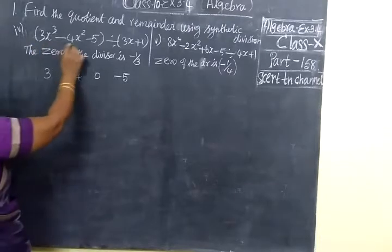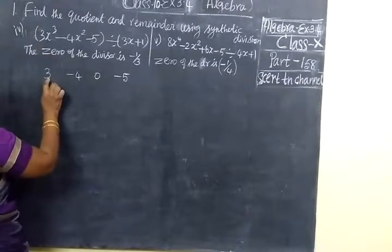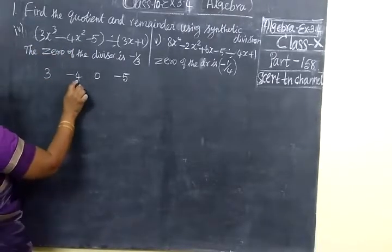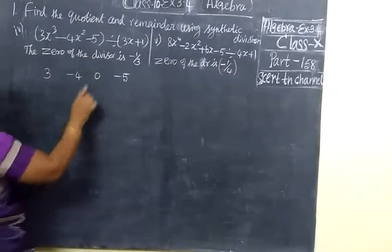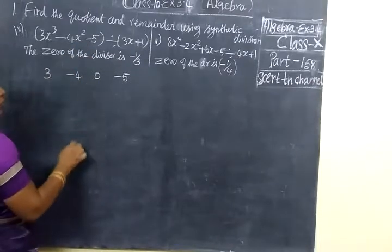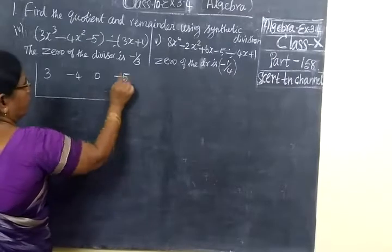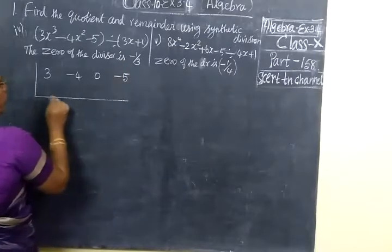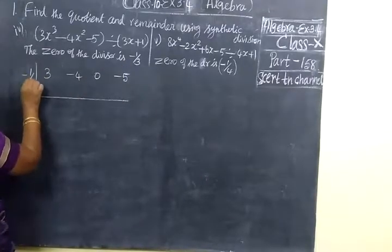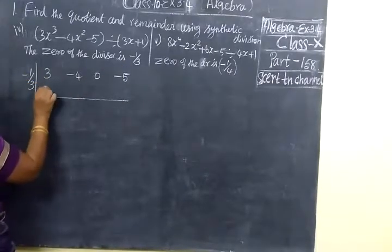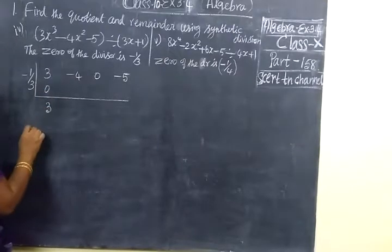This is not in standard form, so we write it as 3, minus 4. Now for the x term we write 0, then minus 5. Put 0 in the divisor box with minus 1 by 3. Starting with 0, you get 3.